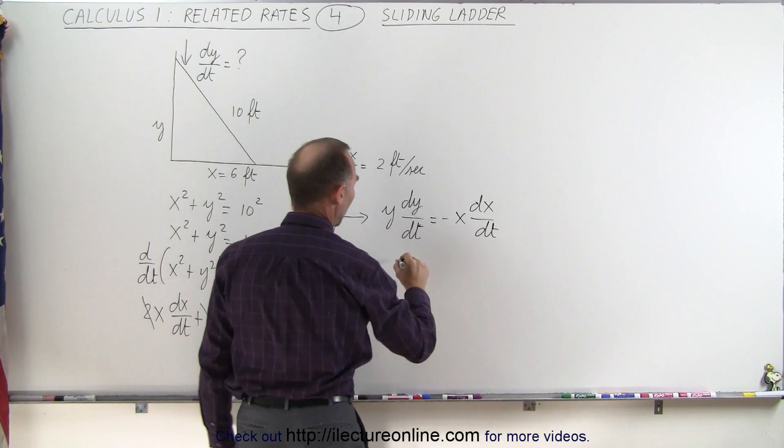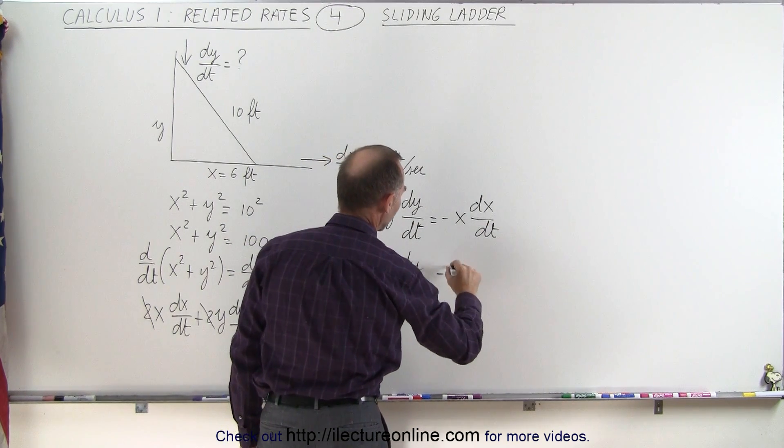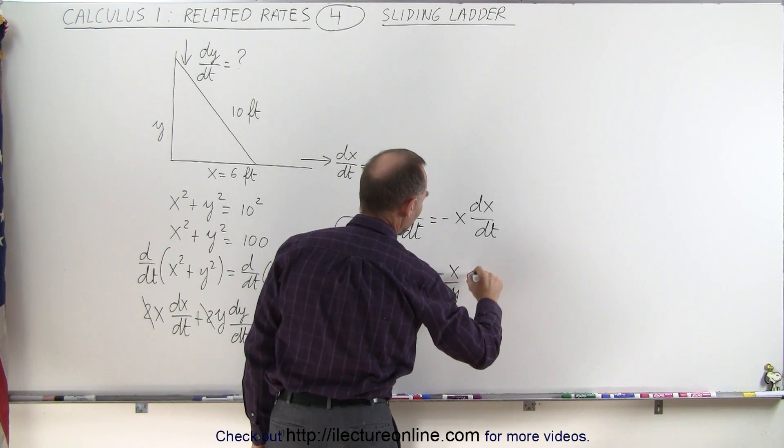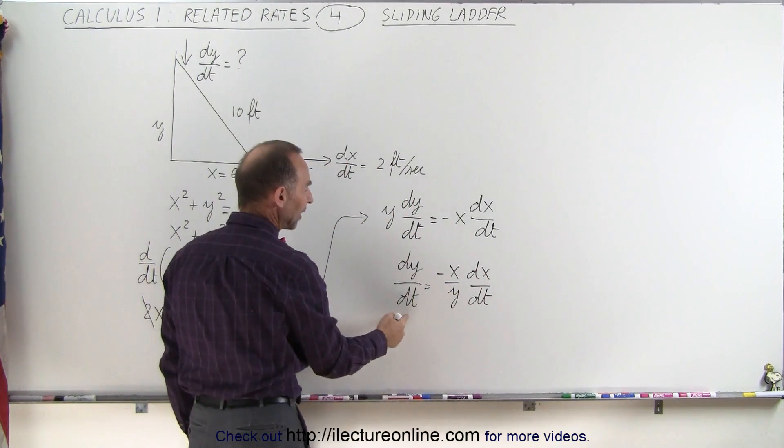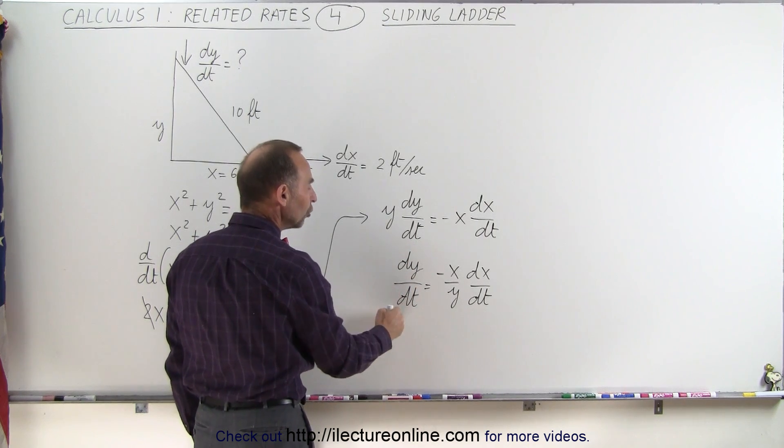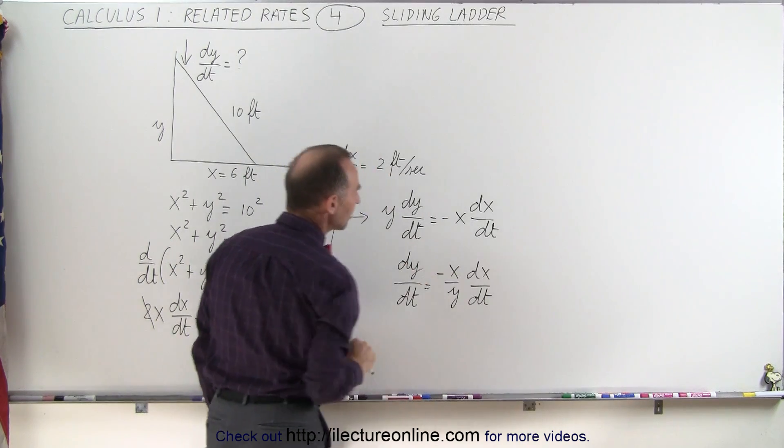If we divide both sides by y, we get dy/dt equals minus x over y times dx/dt. This means to find the value of dy/dt, we need the value for x, the value for y, and the value for dx/dt.